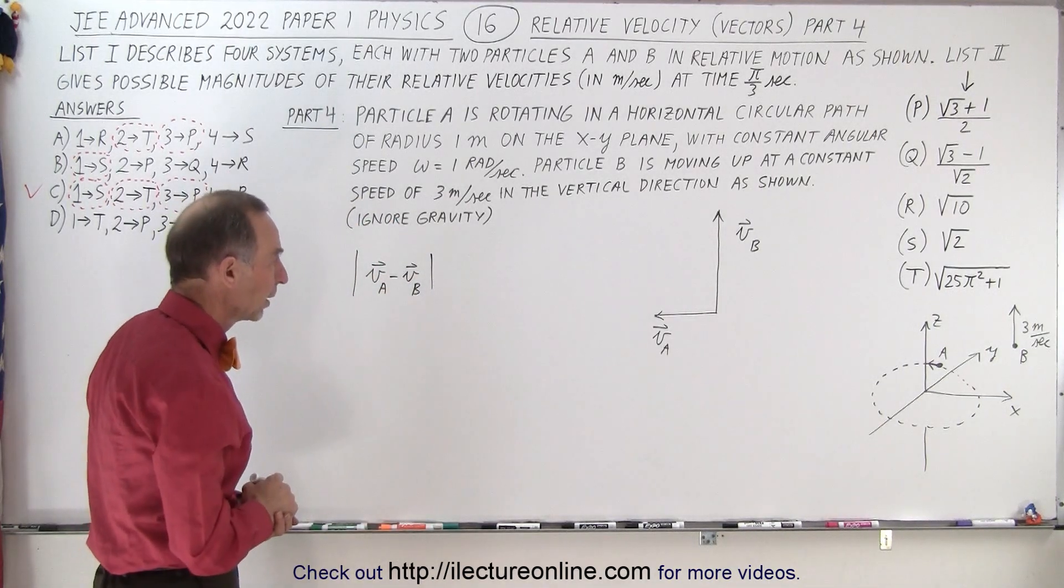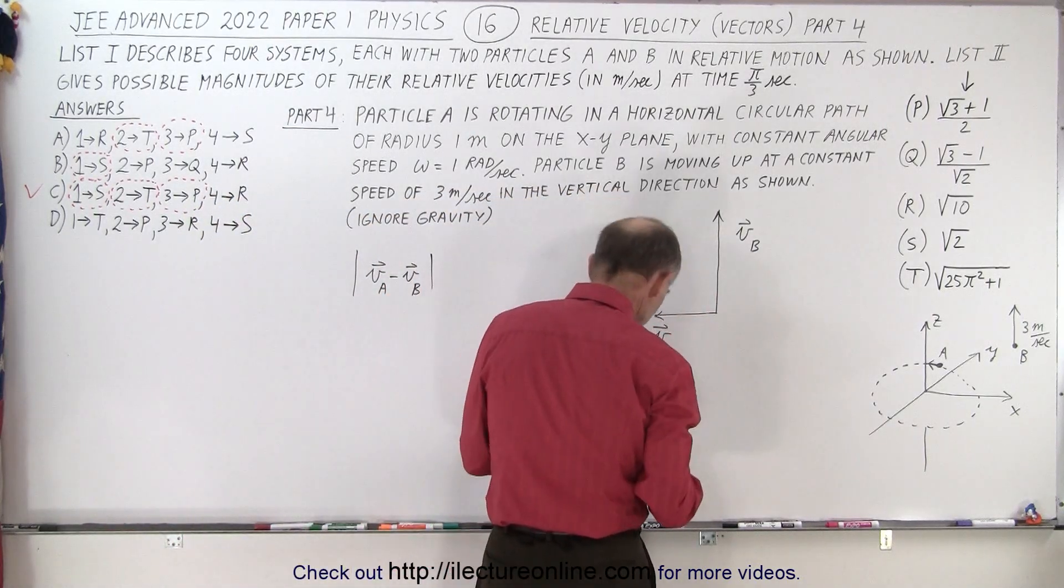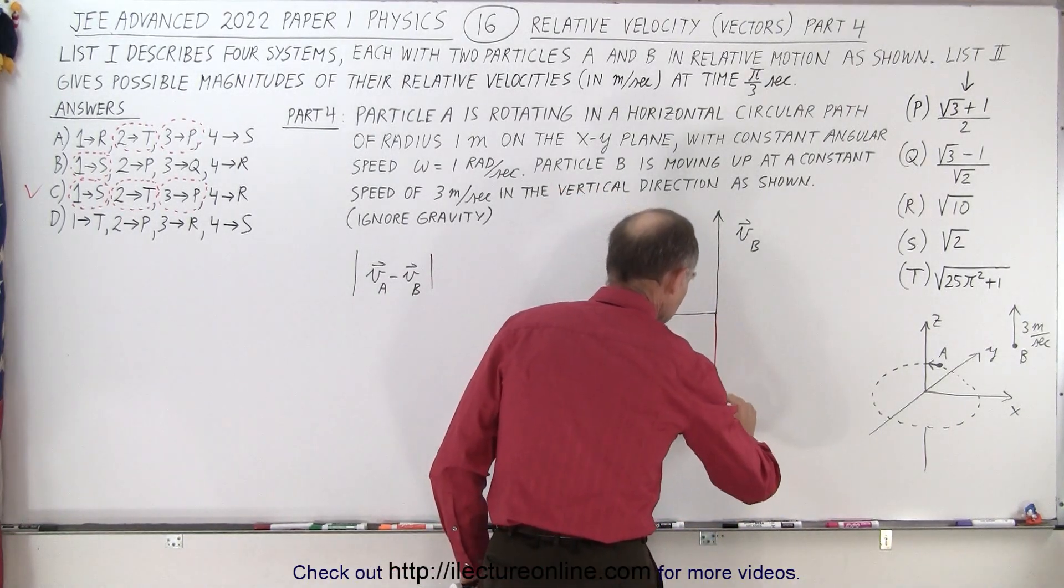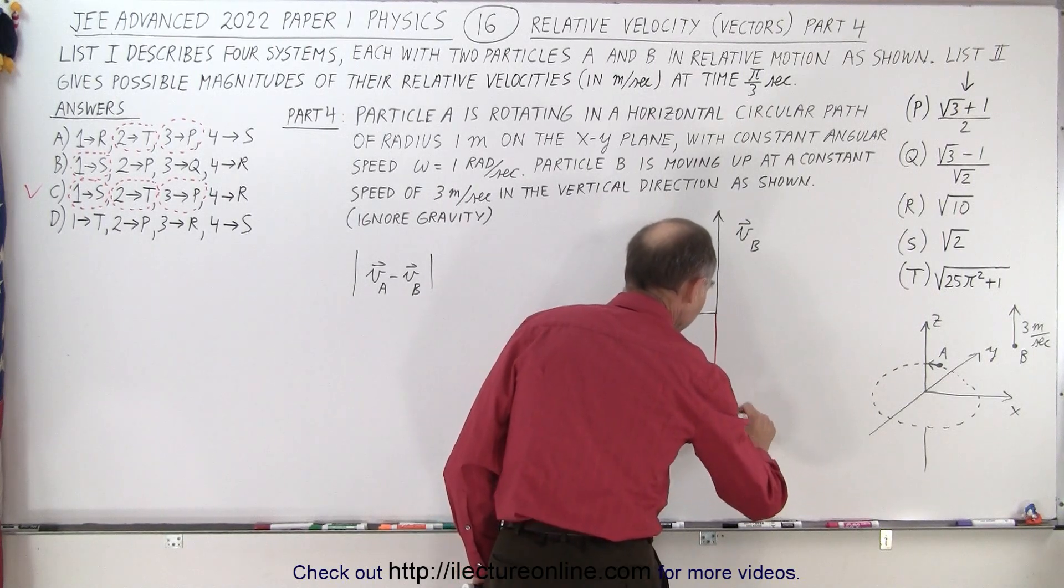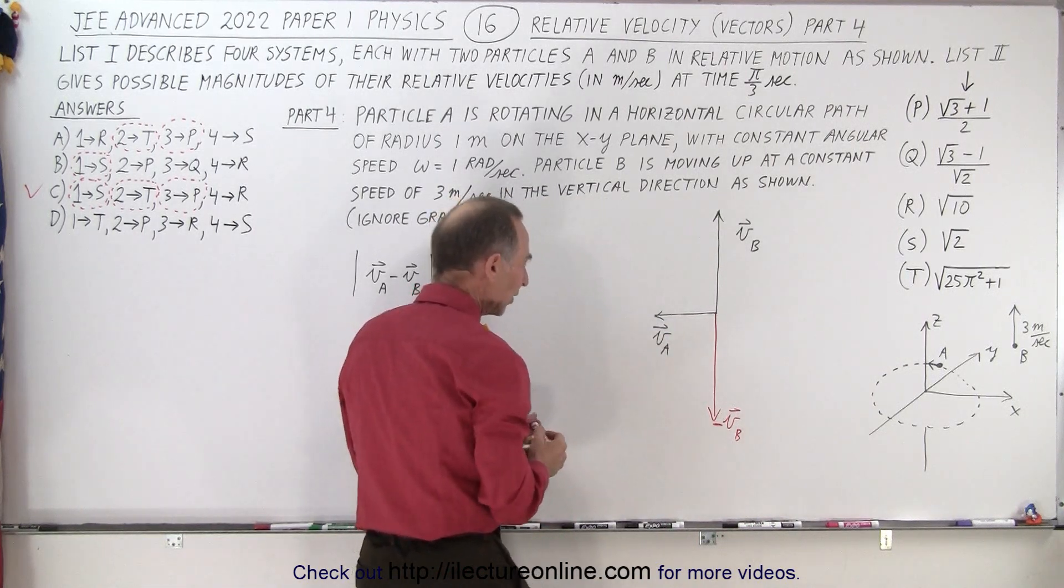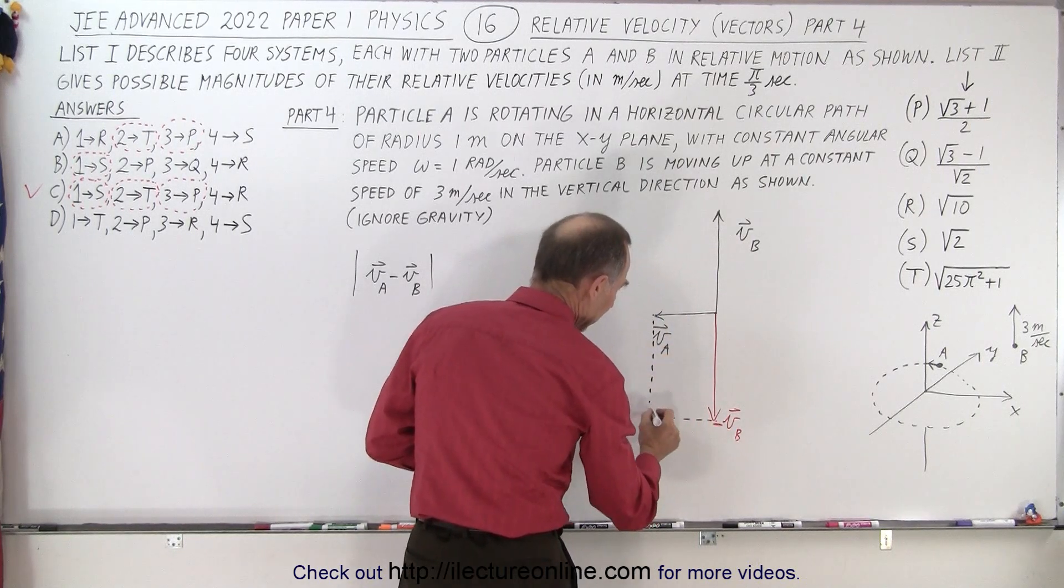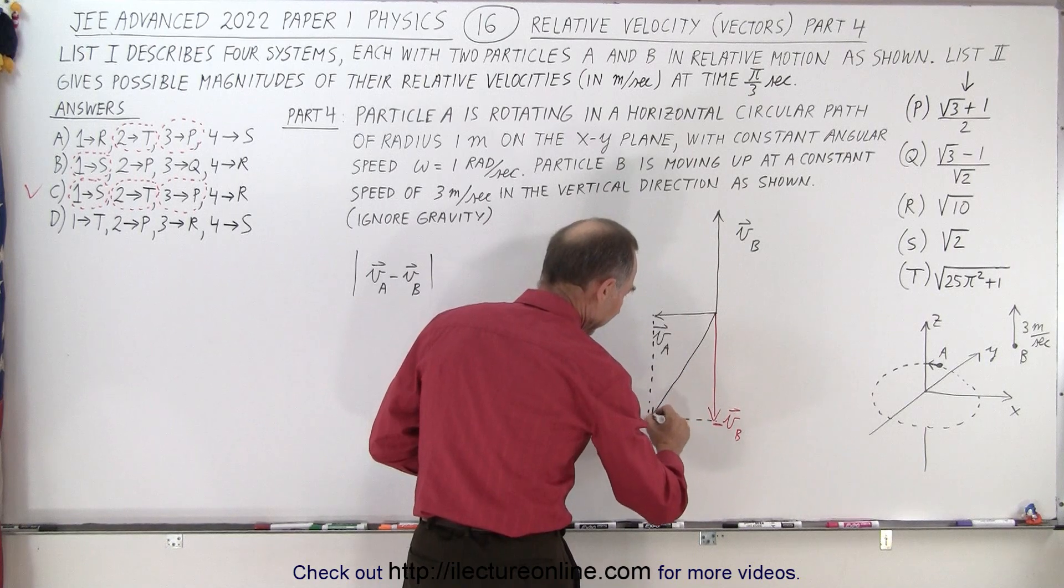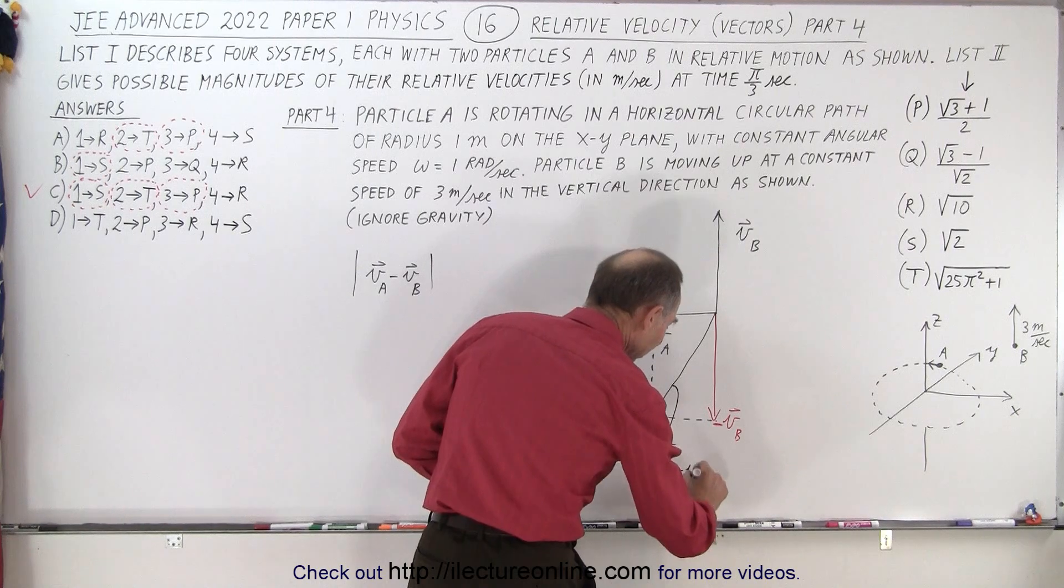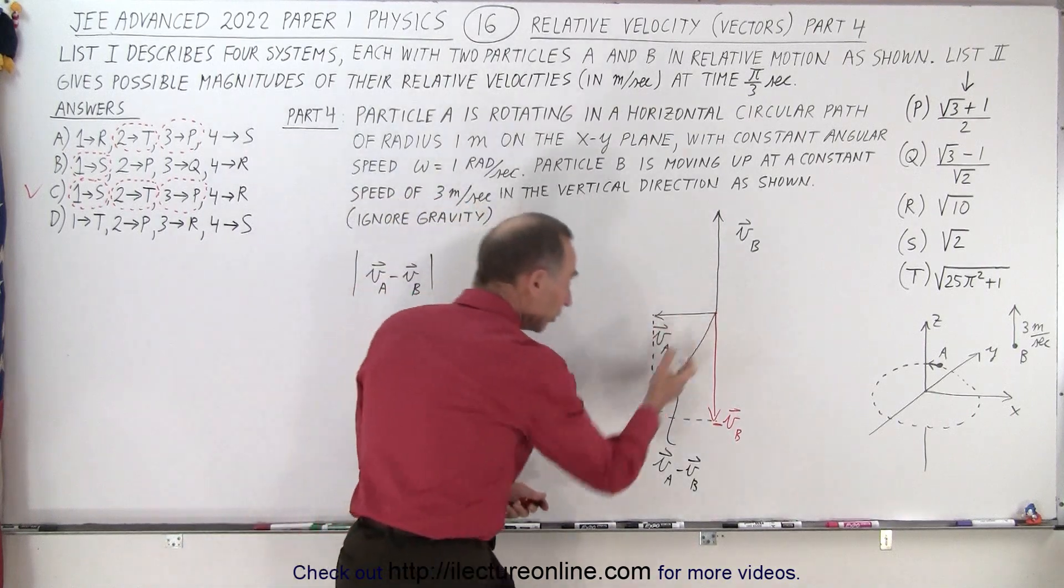In other words, take the magnitude of that. So if this is VB, then we can draw VB in the opposite direction. Let me use a different color. So here, we can call that VB in the negative direction. So put a negative sign in front of that. And then if we add those two together, essentially, we end up with something like this. So if we add those two vectors, this will be the resultant vector. So this vector here would be vector A minus vector B or velocity A minus velocity B.